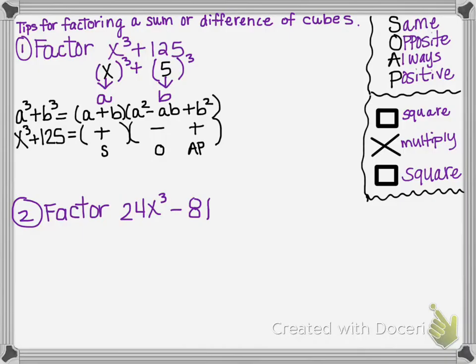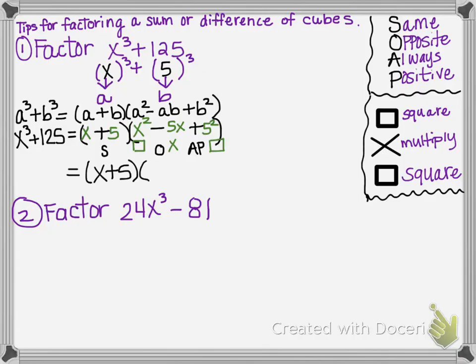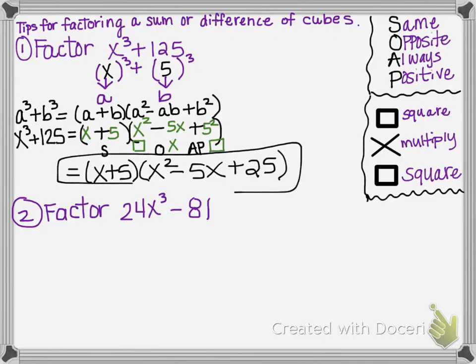Now let's look at square, multiply, square. The first two terms in the binomial are just your a and your b. Our a was x and our b was 5, so we have x plus 5. Square means you take your a value and square it — so x squared. Multiply means you take your a and your b and multiply them: x times 5 gives 5x. The last square means you take the b value and square it — 5 squared. So our final answer is x plus 5, times x squared minus 5x plus 25.